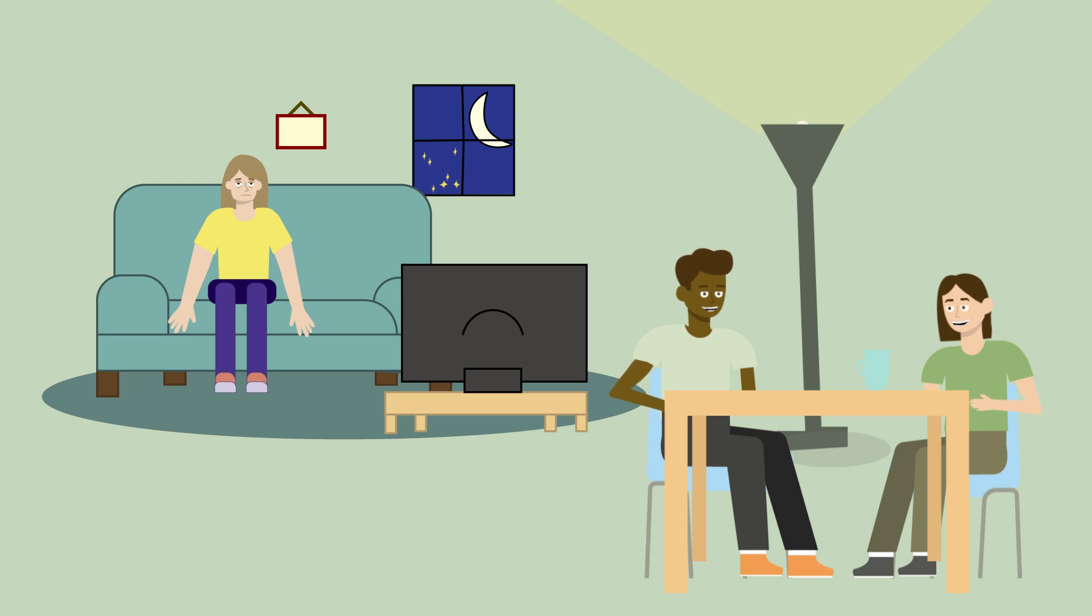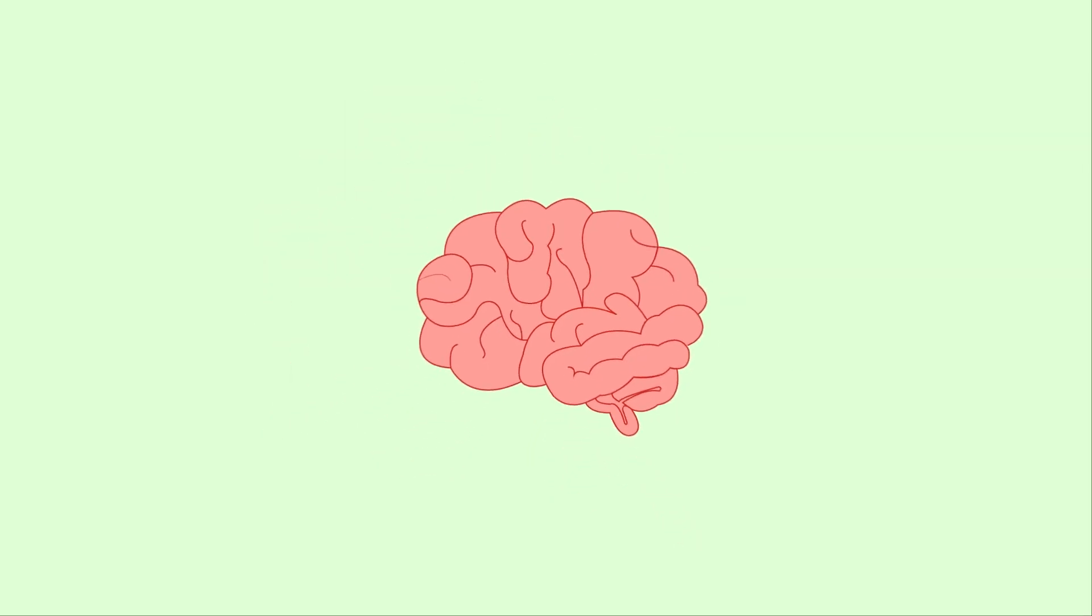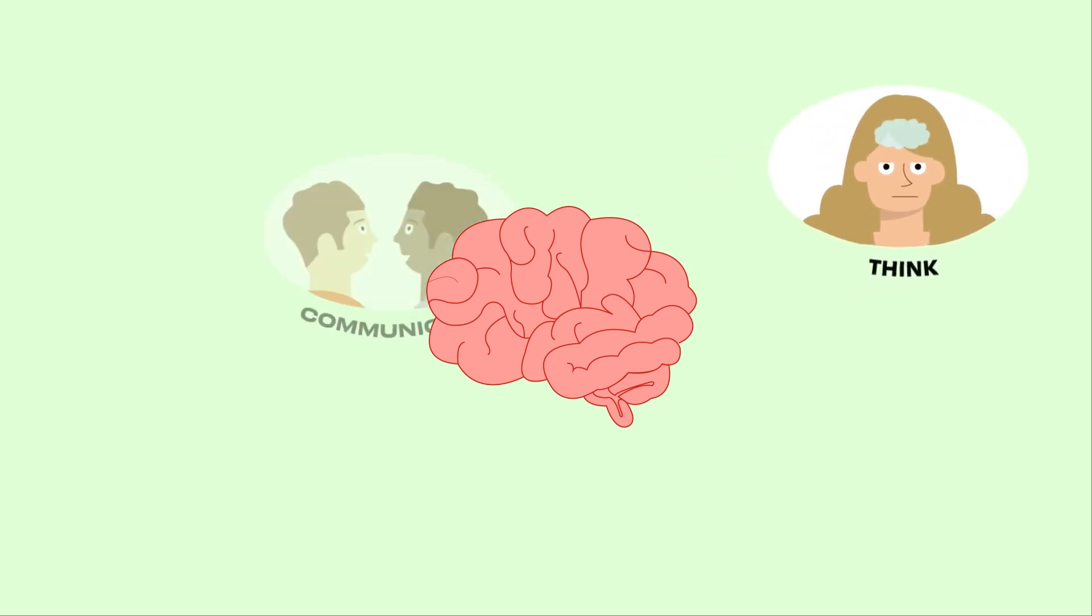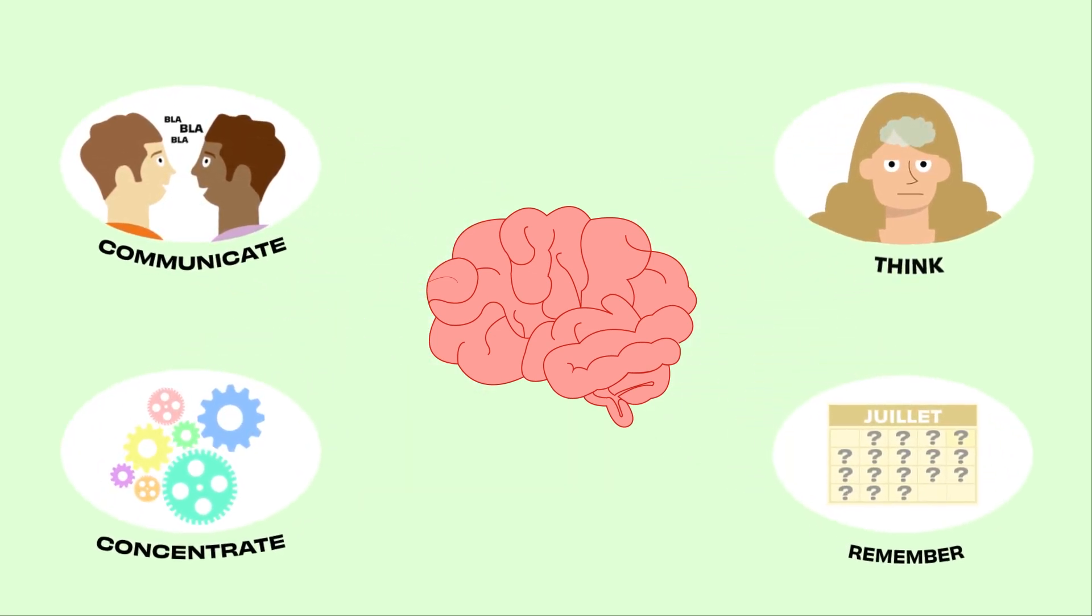Better understanding why they are inactive will allow you to implement strategies that are better suited to the situation. The cognitive abilities of our brain allow us to think, communicate, concentrate, or remember a date or a person.